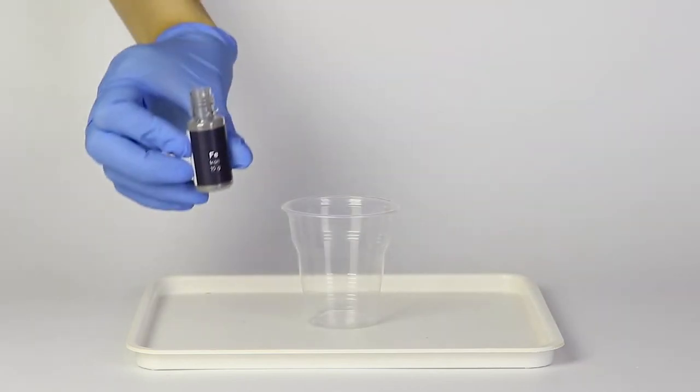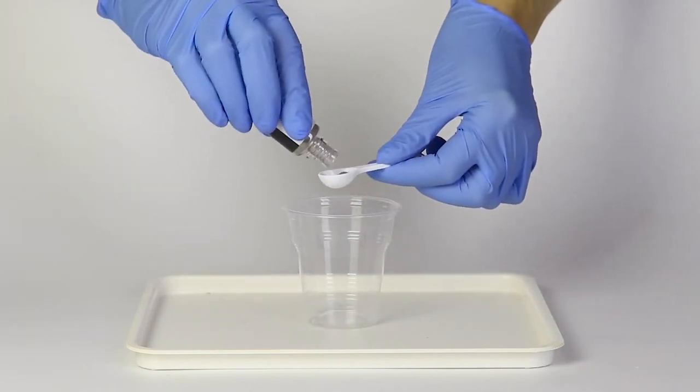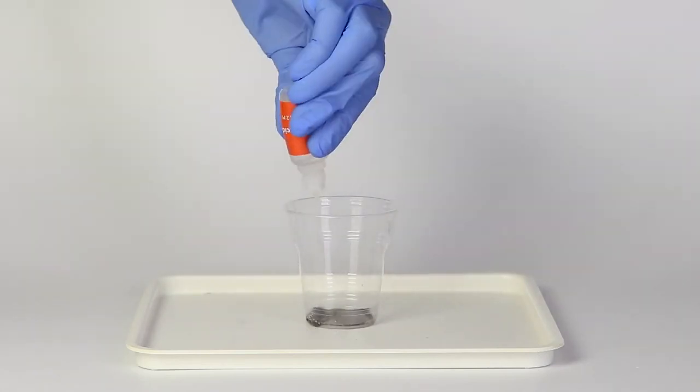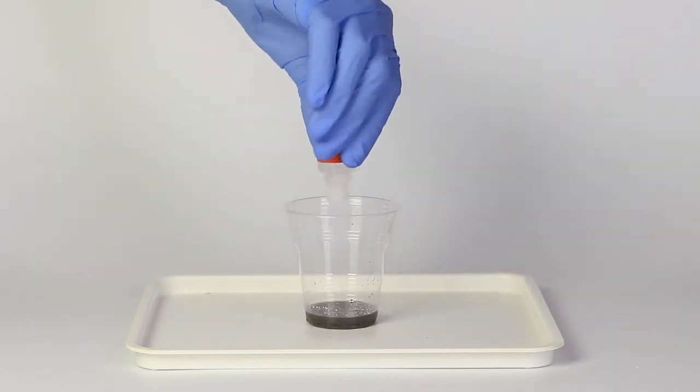Put one big spoon of iron powder into the disposable cup. Then, add one bottle of citric acid and wait five minutes.